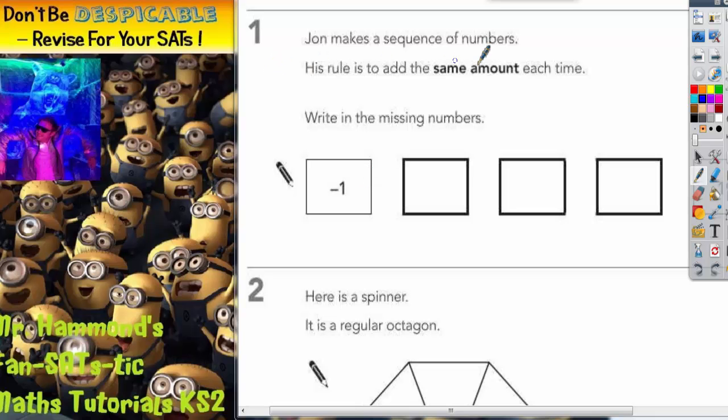Question 1. John makes a sequence of numbers. His rule is to add the same amount each time. Write in the missing numbers.